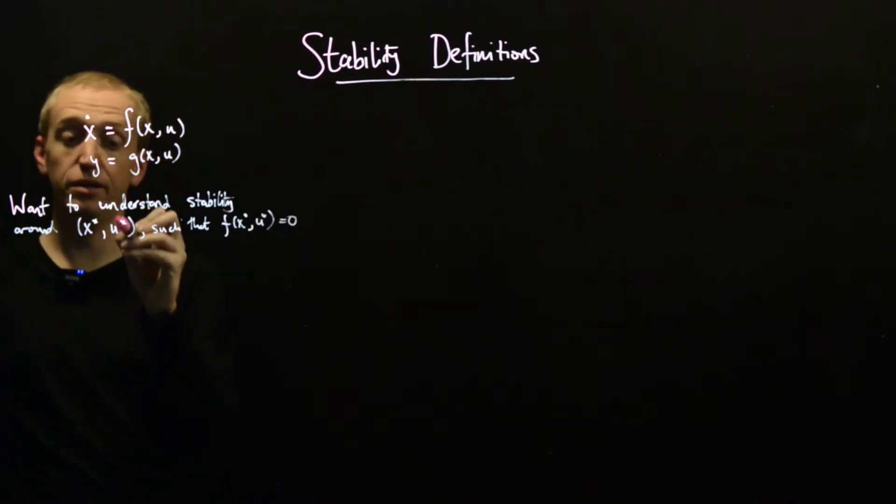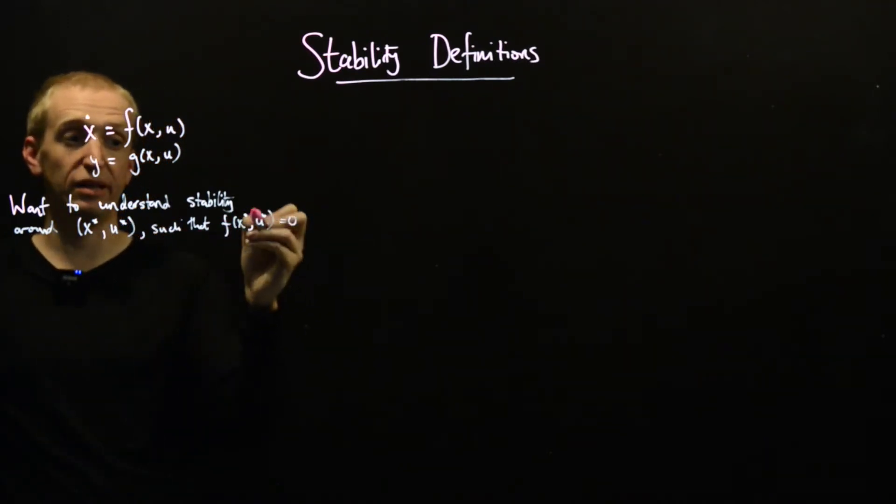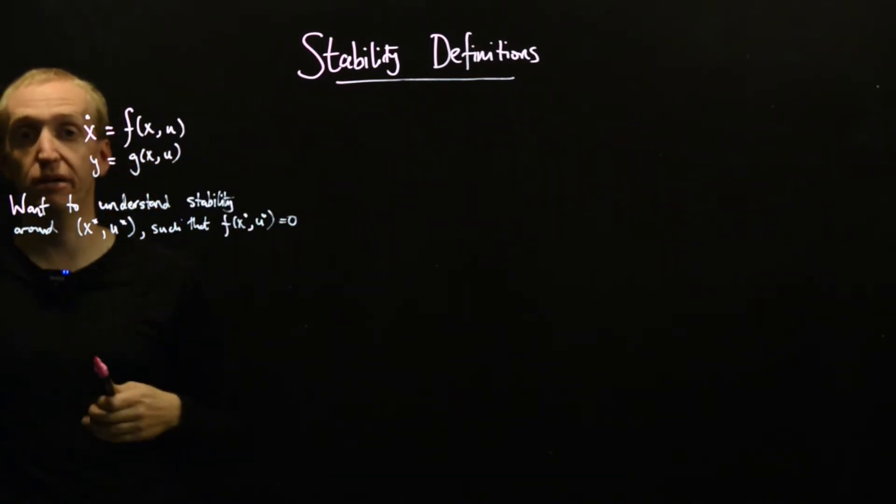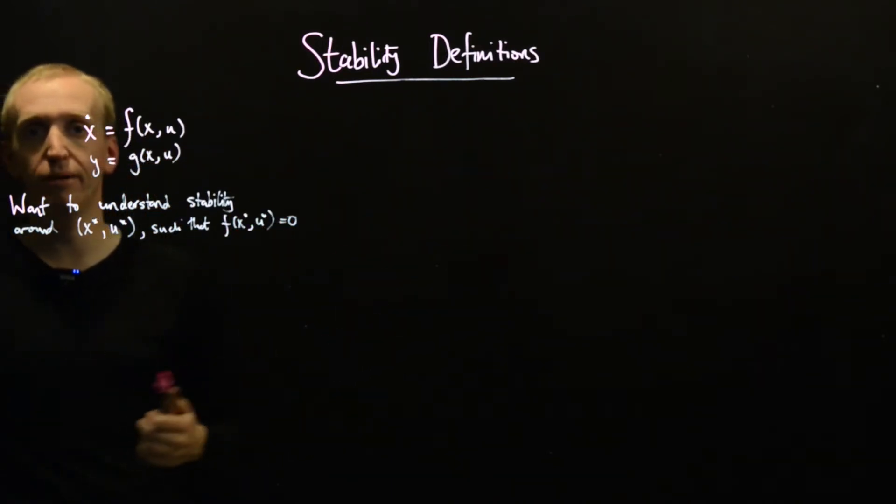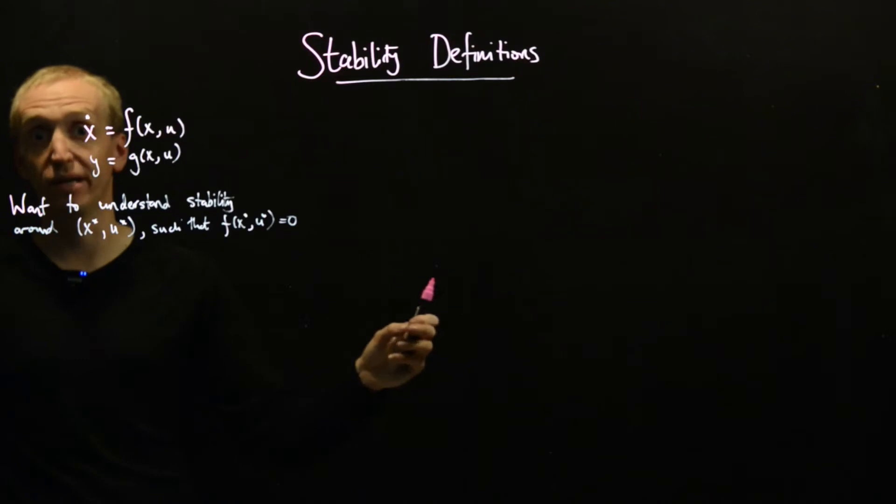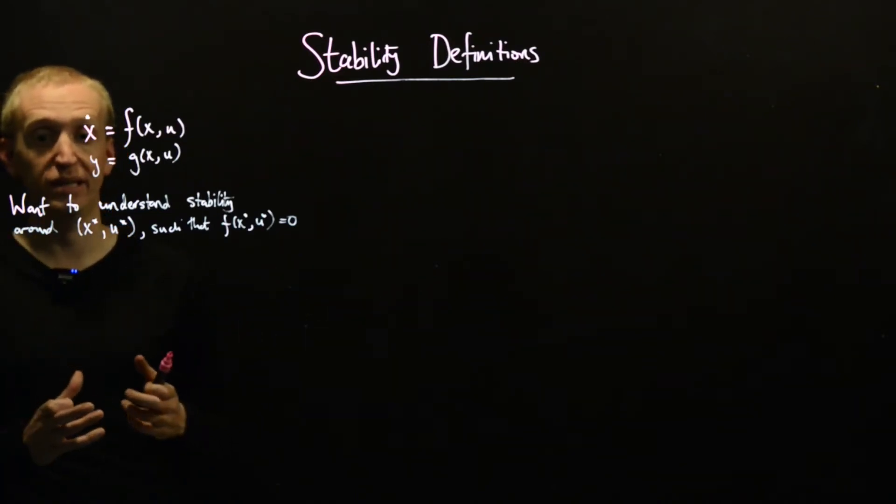So we have a vector x star and u star, such that if we are in those points, x dot will be equal to zero, and so we won't be going anywhere. So that's what it means to be an equilibrium point. Now we want to ask the question, if we take a small step away or a big step away, will we come back and try to capture these ideas mathematically?